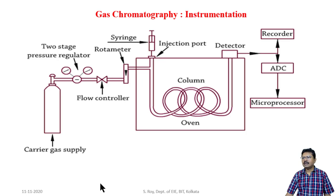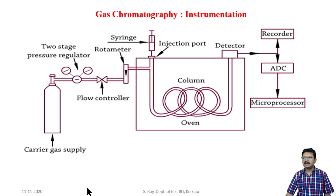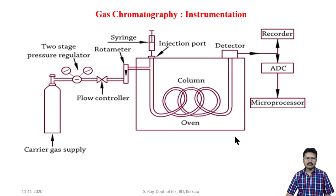Now entering into gas chromatography instrumentation. This is a simple figure for gas chromatography. The two phases are mobile phase and stationary phase. The mobile phase normally carries the carrier gas and the stationary phase is normally the column. The separation of different components mainly happens inside the column.